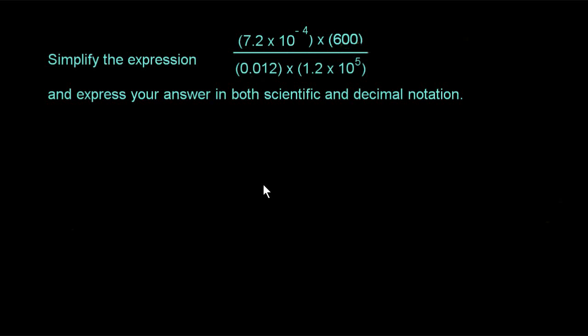You may have an inkling of how to do this problem already. Let's break it up into two parts. See what you get for the numerator part, writing it in scientific notation. Go ahead and do that multiplication and write your answer in scientific notation.